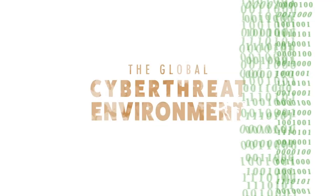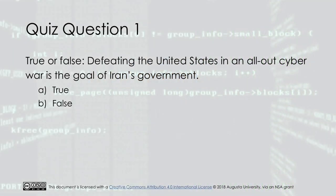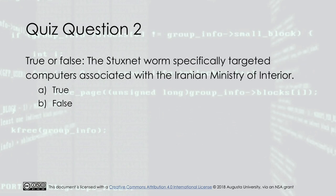Quiz question one — true or false: defeating the United States in an all-out cyber war is the goal of Iran's government. The answer is B, false. Quiz question two — true or false: the Stuxnet worm specifically targeted computers associated with the Iranian Ministry of Interior. The answer is B, false.